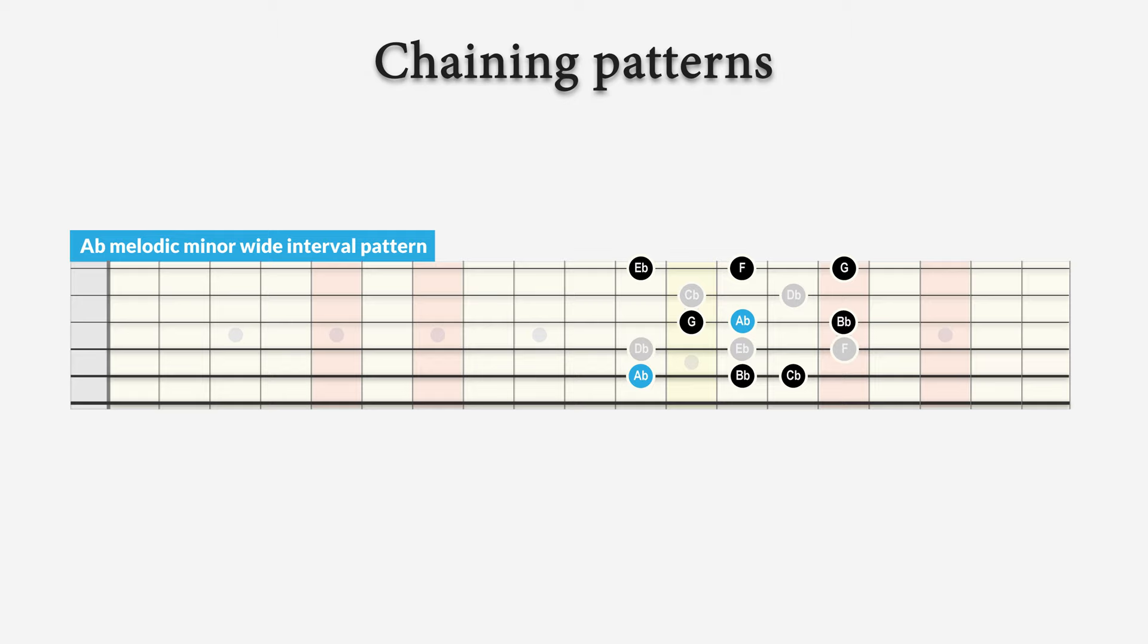Now another interesting scale is of course the melodic minor scale, especially when used as the altered scale. Now in the next example, we use the Ab melodic minor wide interval scale pattern over the G altered chord. And this results in a G altered sound.